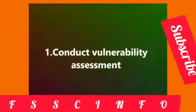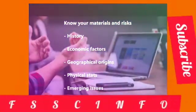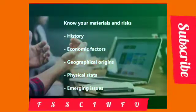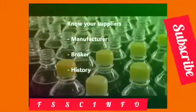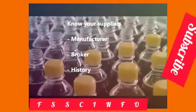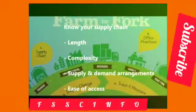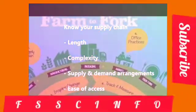A general approach to prevent food fraud can be summarized as follows. One: conduct vulnerability assessment, including know your materials and risks — history, economic factors, geographical origins, physical state, emerging issues; know your suppliers, manufacturer, broker history; and know your supply chain — length, complexity, supply and demand arrangements, ease of access.